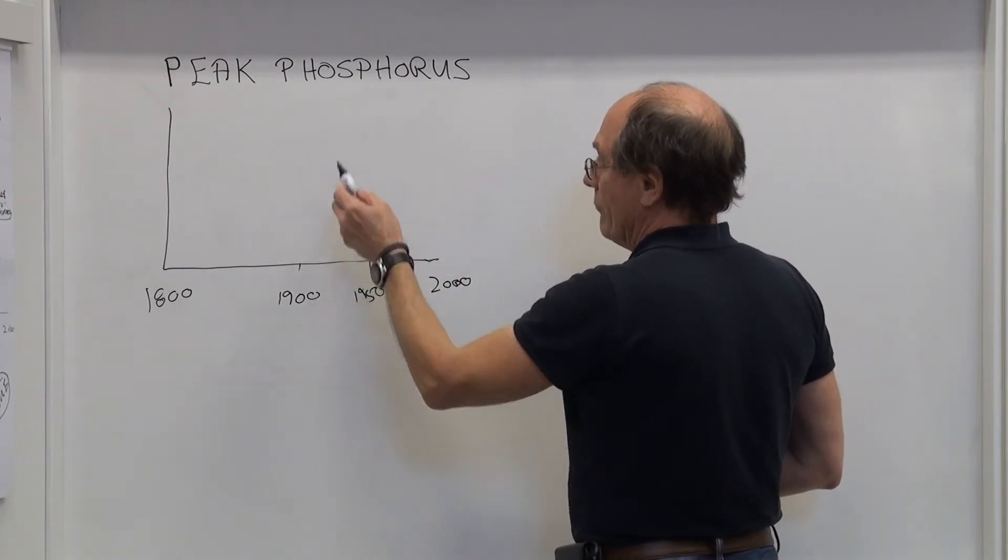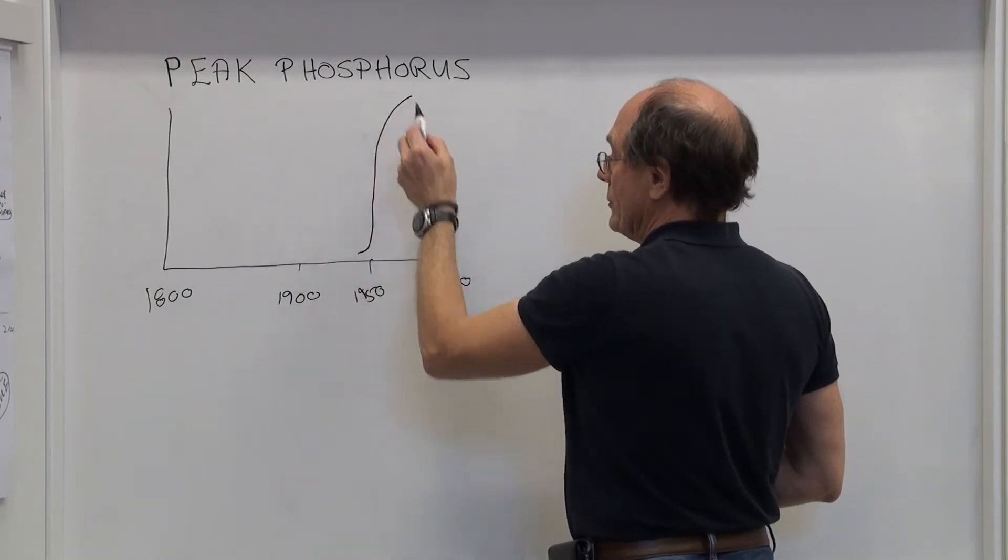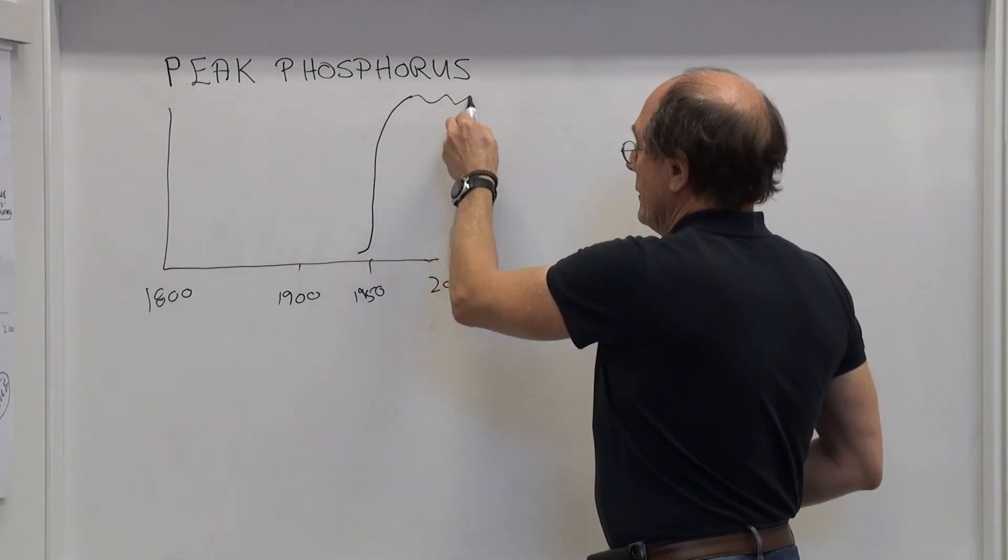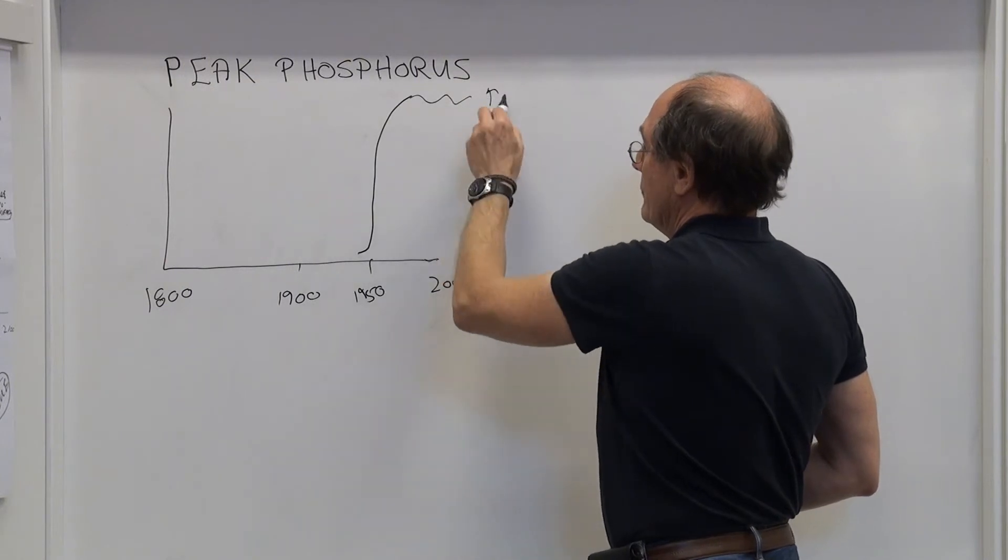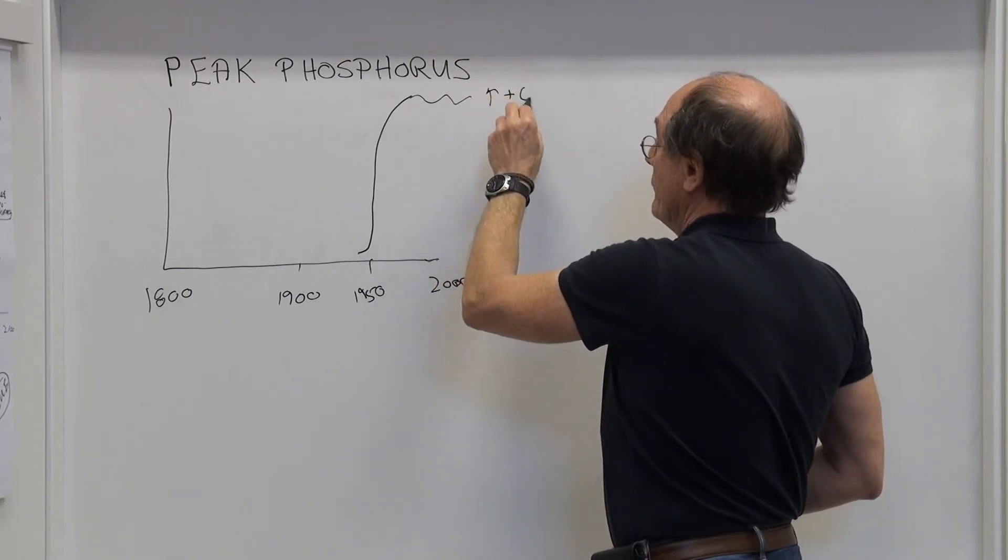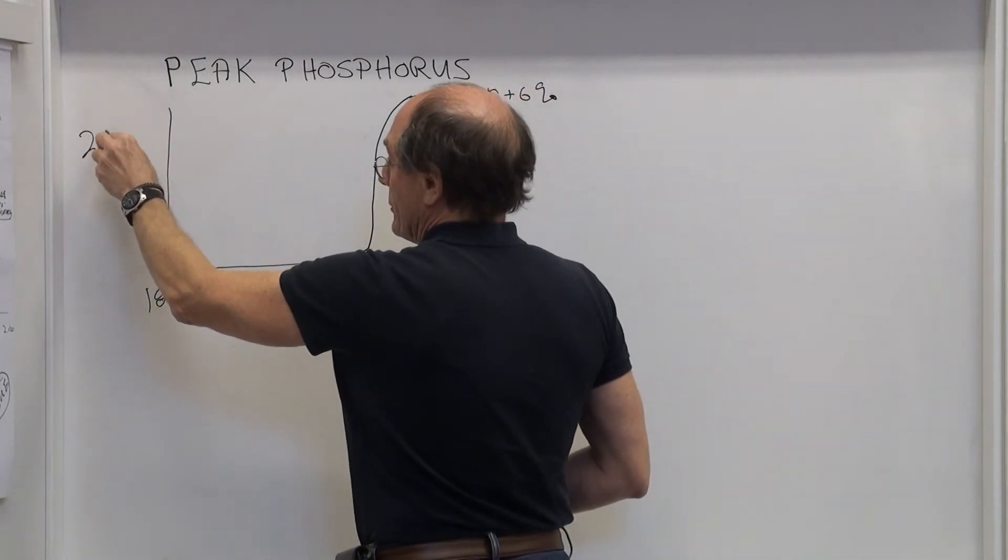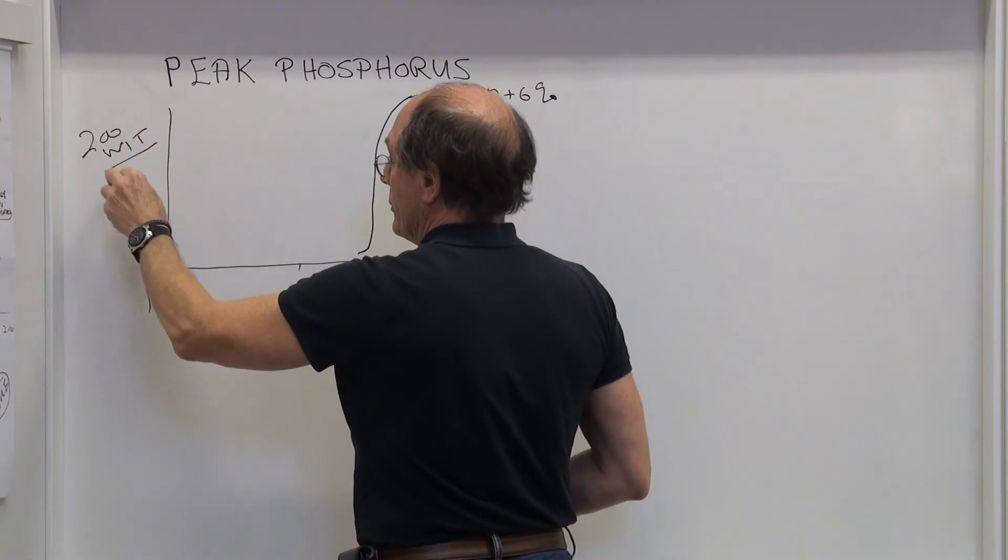The use of mined phosphorus, mainly from sedimentary rock, just skyrocketed during this period. And it's staying up at this level, but increasing some years, presently at a rate of about 6% per year. And we're at a rate of extraction of about 200 megatons of rock per year.